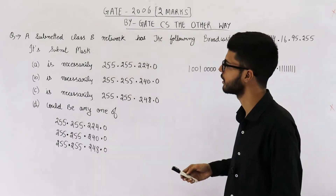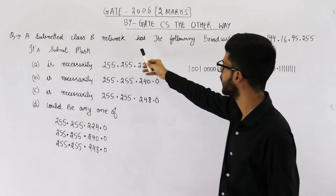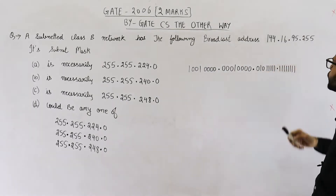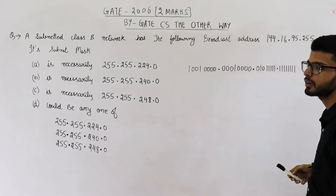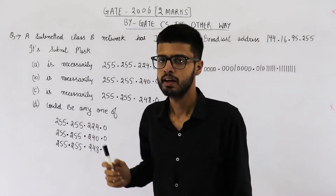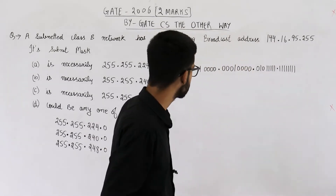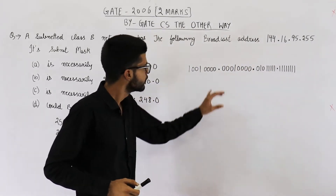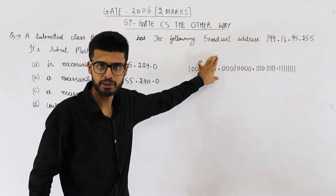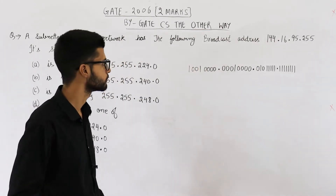Read the statement. It says a subnetted class B network has the following broadcast address: 144.16.95.255. Its subnet mask is?